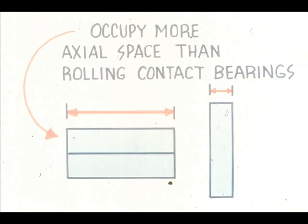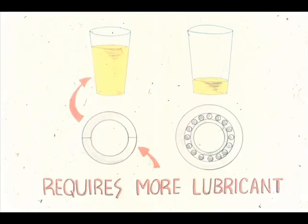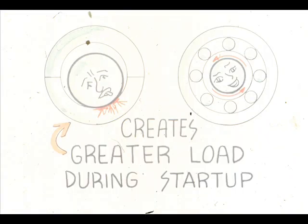One of the disadvantages of sleeve bearings is that they require more axial, or linear, space than a comparable rolling contact bearing. Another disadvantage is that they generally require considerably more lubricant than a comparable rolling contact bearing. Sleeve bearings also create a greater load on the driver during start-up, since the shaft is riding directly on the bearing, at which time there is a greater chance of damage to the shaft journal.